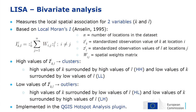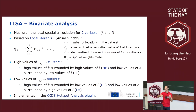We extend this to the bivariate case, which measures local spatial similarity between standardized values of two variables. Standardized means mean equal to zero and variance equal to one. The formula is the same local Moran's I, but now the neighboring observations Z_J are observations of the second variable. Clusters are then: a high value of the first variable surrounded by high values of the second, or low-low. Outliers are: high-low or low-high combinations. This is also implemented in the QGIS Hotspot Analysis plugin.